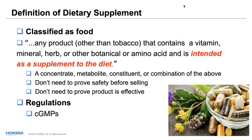DSHEA classified supplements into the food group. Their definition is any product other than tobacco that contains a vitamin, mineral, herb, botanical, etc., intended to supplement the diet. The key concern here is you don't need to prove it's safe before selling it, and you don't need to prove it's effective — which is one of the key reasons a lot of these things don't do what the scientific literature states. The regulations are called the CGMPs — Current Good Manufacturing Practices — an evolving process.